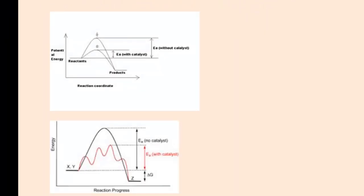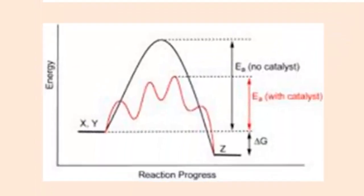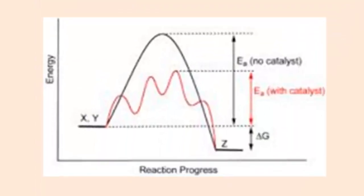Here is a pair of energy diagrams showing a decrease in activation energy due to a catalyst. The first energy diagram shows a reaction with one transition state and no intermediates; the catalyzed reaction pathway also has one transition state and no intermediates. In the second energy diagram, the uncatalyzed reaction has one transition state and no intermediates, but the catalyzed reaction has four transition states and three intermediates.